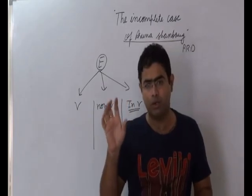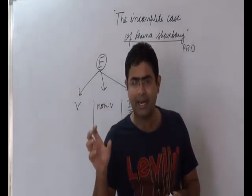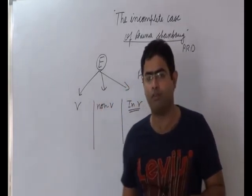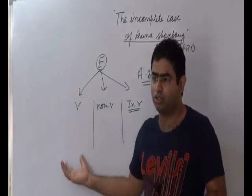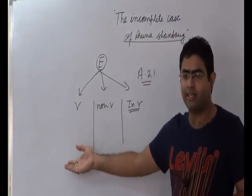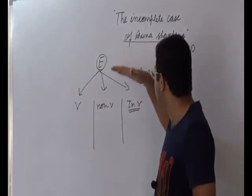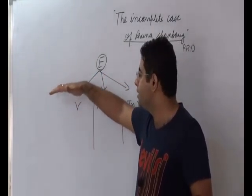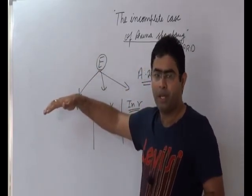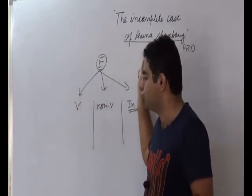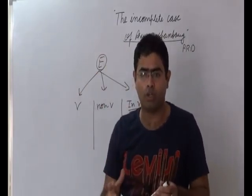From mains examination point of view, this is sufficient. But in order to properly analyze it from the examination point of view, you must compare it with Section 309, the suicide thing, and these three types of euthanasia. You must also know about the entire case, Pinky Virani and Aruna Shanbaug's case, how she had fought for ending the life of Aruna Shanbaug.